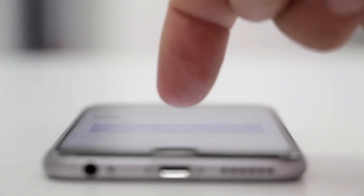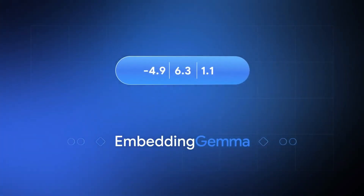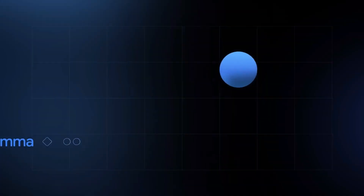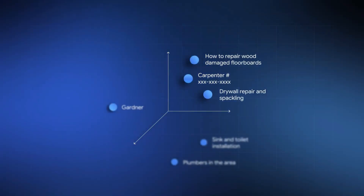Google optimized this for mobile chips — it runs great on Android and iOS. You can literally put AI embeddings in a mobile app with no cloud required. Think about the possibilities: a translation app that works offline, a document scanner that understands content, a voice assistant that knows your personal information.